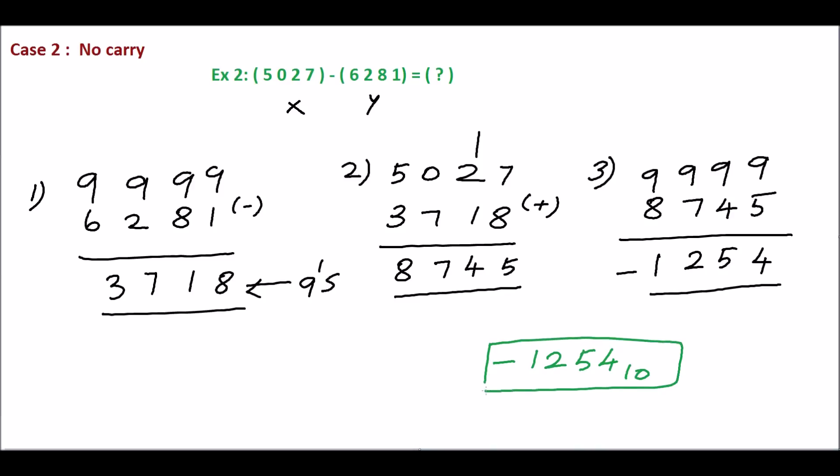We'll summarize the steps. First, find the 9's complement for the subtrahend, that is the second number. Then add the first number and the 9's complement of the subtrahend. If carry is produced in the addition, add the carry with the LSB of the sum. Otherwise, take the 9's complement for the sum and assign the negative sign. Thank you.